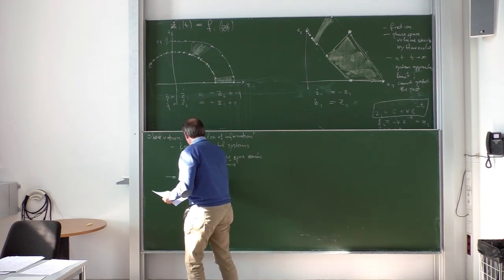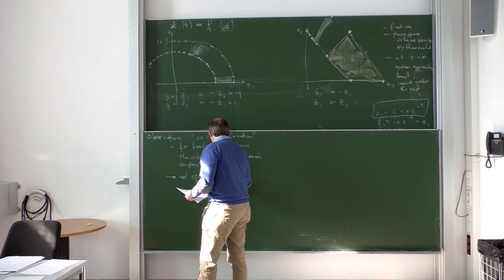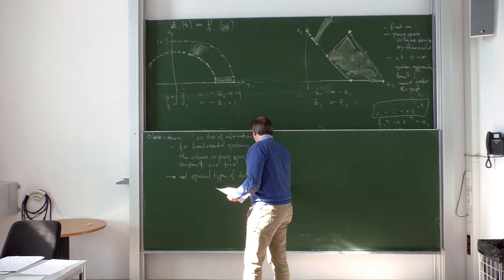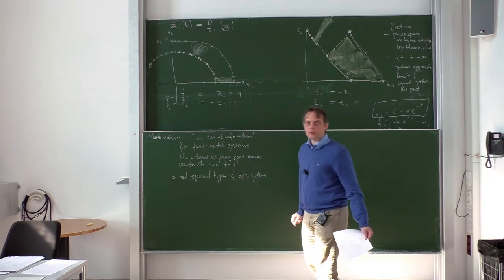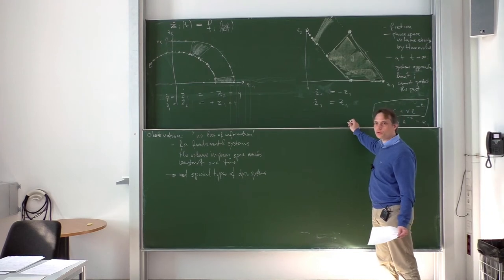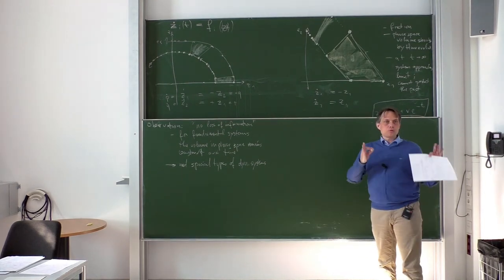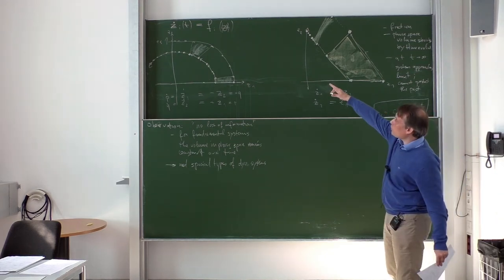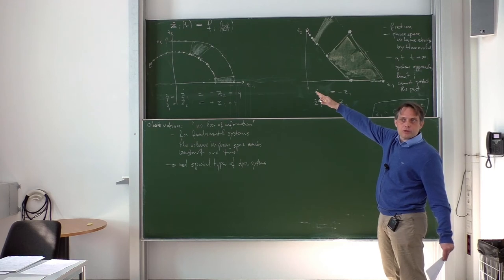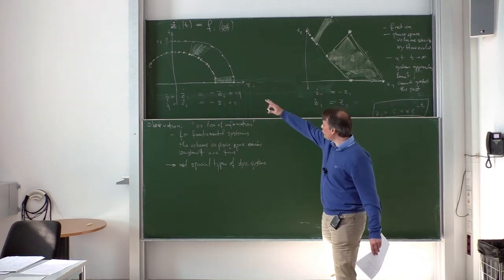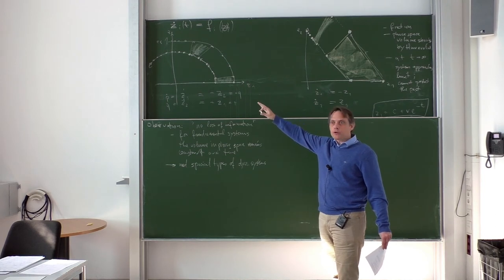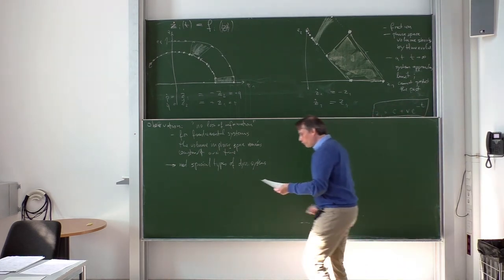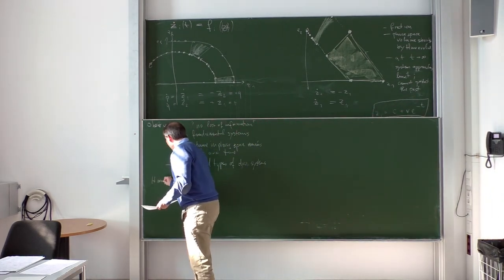We need special types of dynamical systems which do not lose information. And those are Hamiltonian systems, where the function f is determined by a Hamiltonian, and where the variables z are actually p's and q's. Those dynamical systems have the property of preserving phase space volume. And so this brings us now to Hamiltonian dynamics.